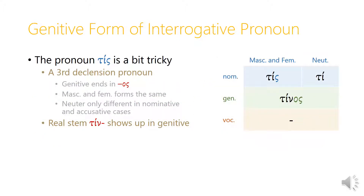The interrogative pronoun, tis or ti, is a third declension pronoun. Where we had two forms depending on gender in the nominative, in the genitive we have just one form for all three genders: tinos, with that same os ending. Like many third declension nouns, the stem has changed from t to tin, which we'll see in all other forms of the interrogative pronoun.